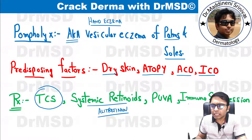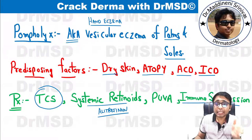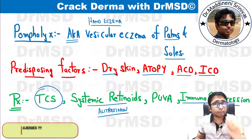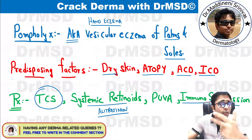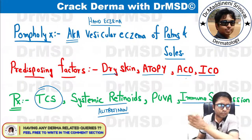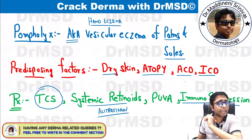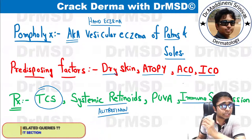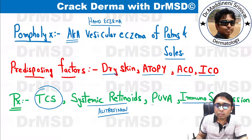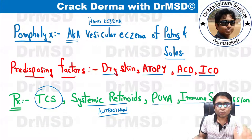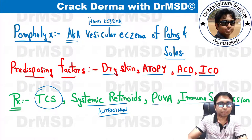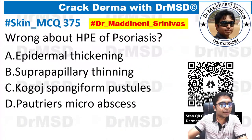In certain patients we prefer immunosuppression if the condition is very debilitating — in the form of methotrexate, azathioprine, or cyclosporine. These are reserved for extremely recalcitrant pompholyx. We can also give PUVA therapy, that is psoralen and UVA therapy. This is a brief overview of pompholyx.